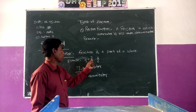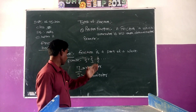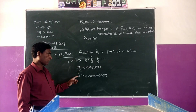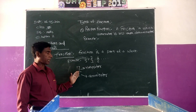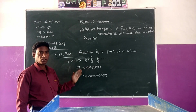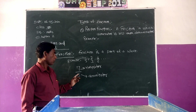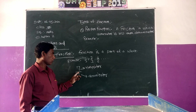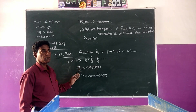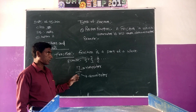If any number is written in this form, it is a fraction. For example, 7 by 3 is a fraction. In this fraction, 7 is the numerator and 3 is the denominator. The digit which is above the fraction line is known as the numerator, and the digit which is below the fraction line is known as the denominator.